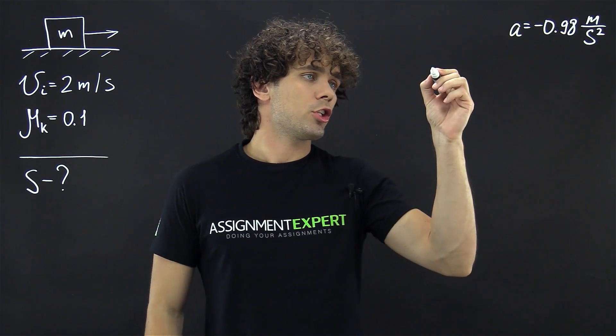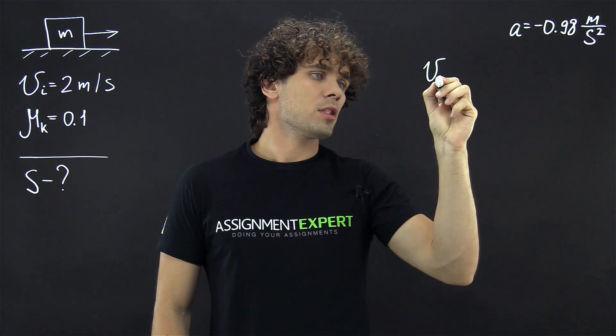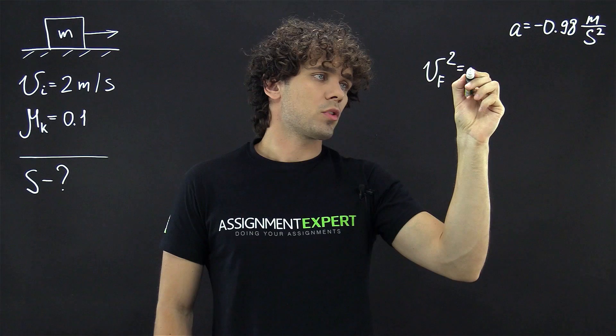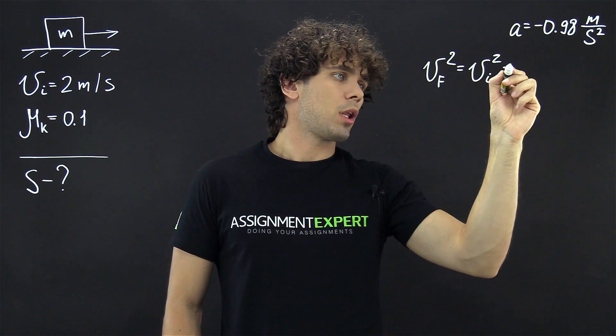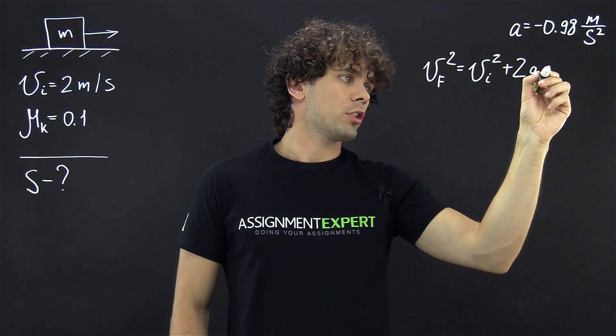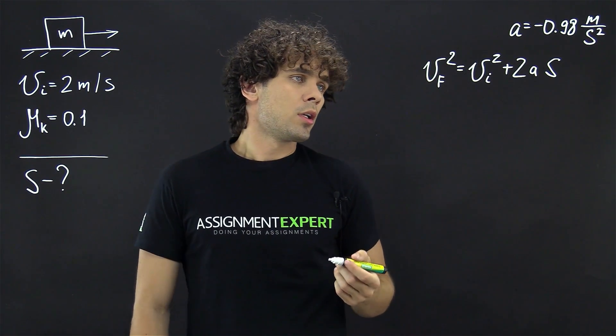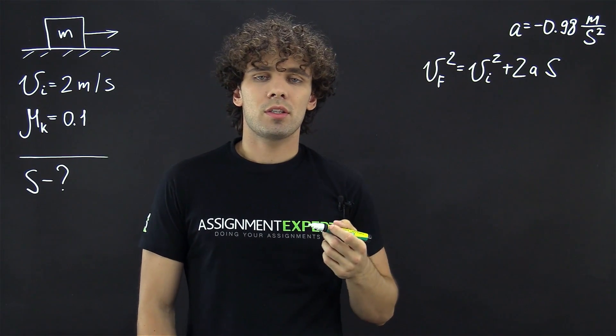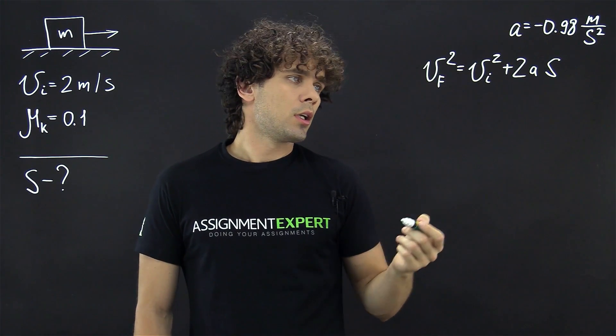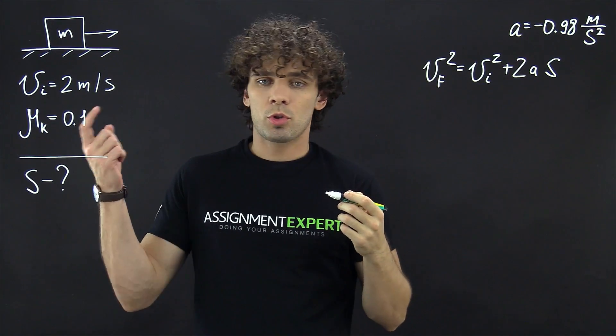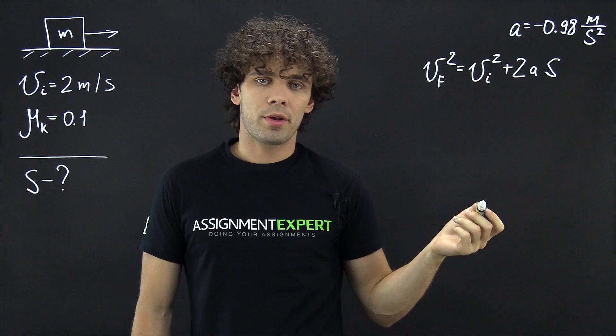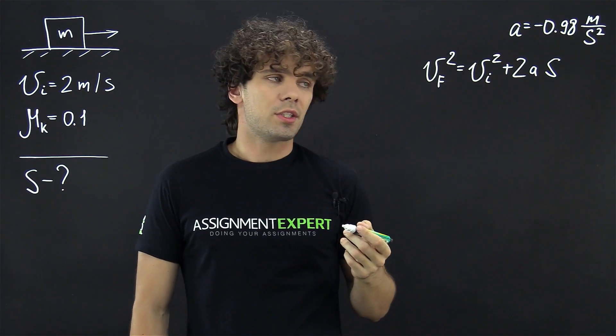So, the kinematic equation looks like this. The final speed squared equals initial speed squared plus 2 times acceleration times the distance that the box travels before it stops. So, in our case, final speed is 0 because the box stops. Then we have initial speed, which is given. We have acceleration, we already found it. So, we just need to find the distance.